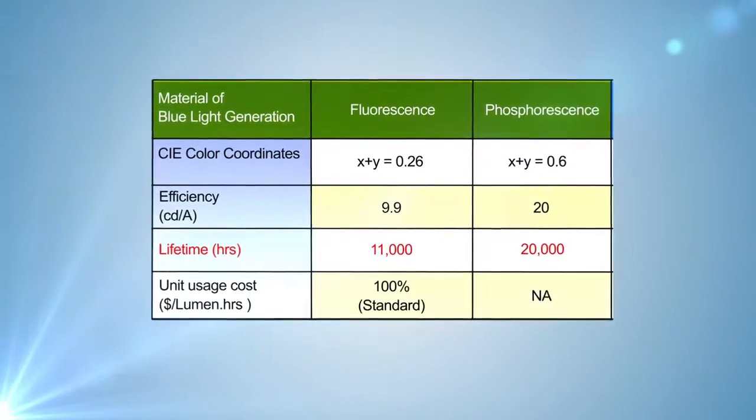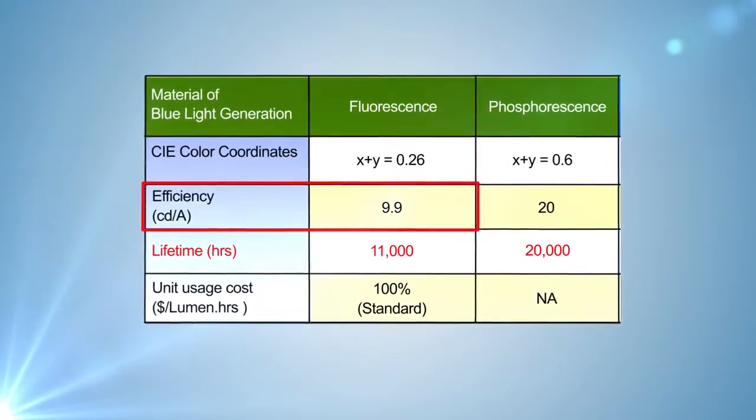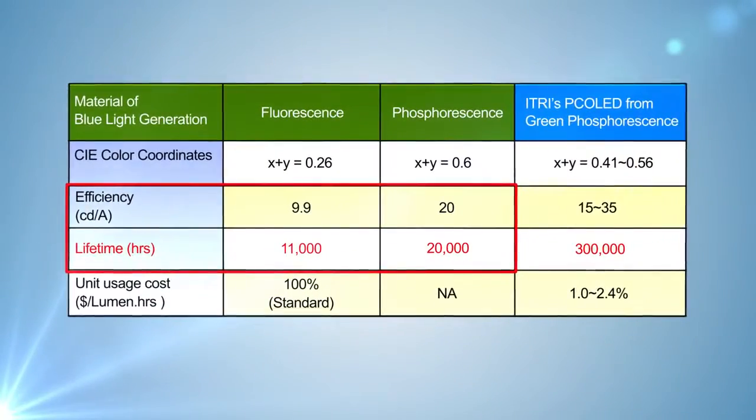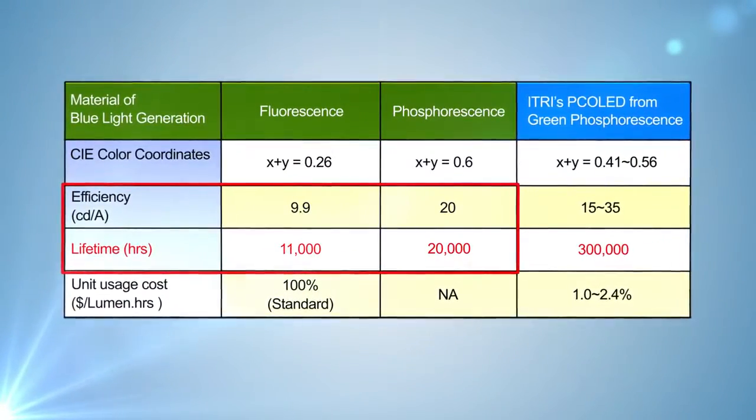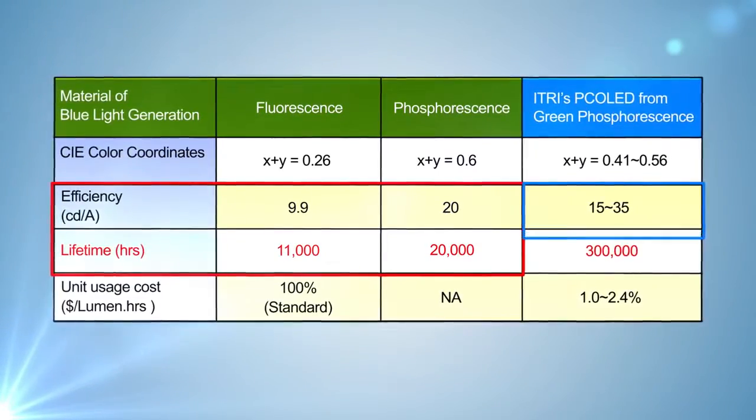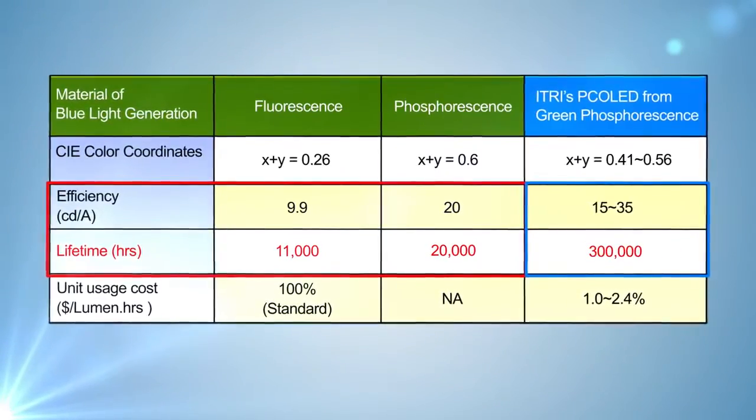Currently, the maximum efficiency of the blue material is about 10 cd/A, and its lifetime is around 10,000 to 20,000 hours, whereas PCO LED emits blue light in an efficiency of 15 to 35 cd/A, with a lifetime of up to 300,000 hours.